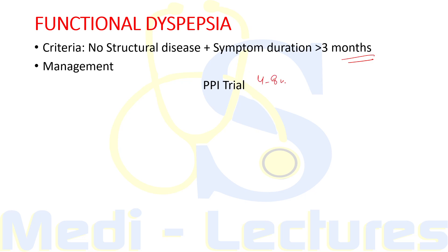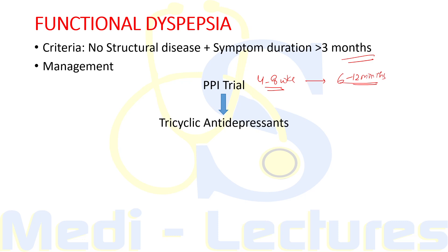To manage functional dyspepsia, we start with a proton pump inhibitor trial for four to eight weeks. We advise the patient to take the PPI empty stomach in the early morning, 30 to 60 minutes prior to a meal. If symptoms improve, this PPI can be continued for 6 to 12 months. If the patient returns after 8 to 12 weeks with no improvement in symptoms, we discontinue the PPI and start the patient on tricyclic antidepressants for 8 to 12 weeks.